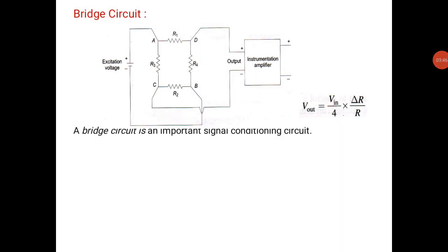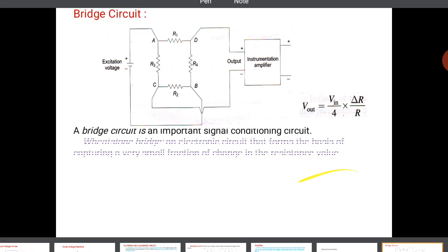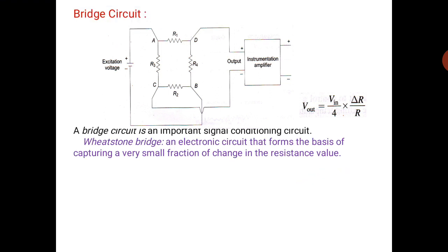Next is bridge circuit. Figure shows the block diagram of a bridge circuit. There are four resistances R1, R2, R3, and R4 connected across A, B, C, D as shown in the figure. A bridge circuit is an important signal conditioning element.